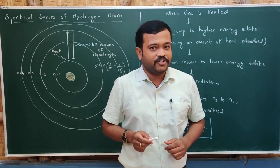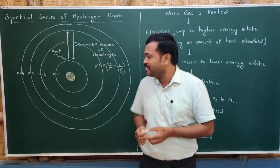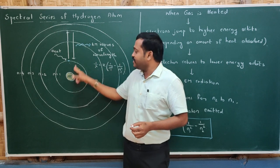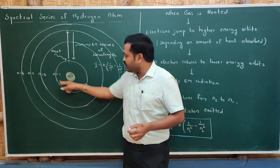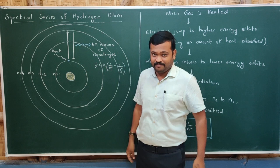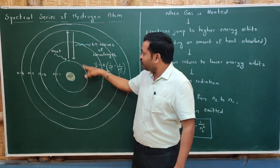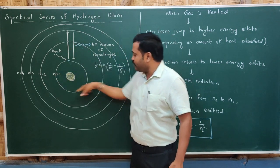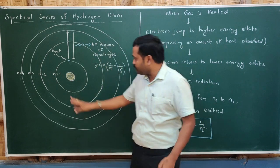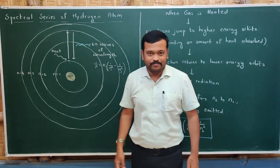When a gas is heated, what happens inside an atom? This is an atom which consists of a nucleus, and these are the energy orbits in which electrons rotate. This is the first energy orbit, the second, the third, and the fourth — represented by n = 1, n = 2, n = 3, and n = 4.